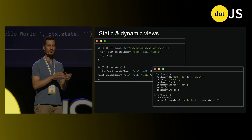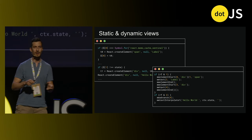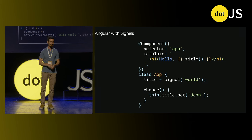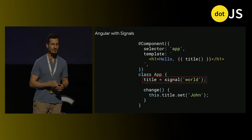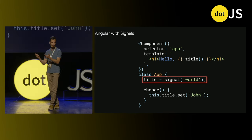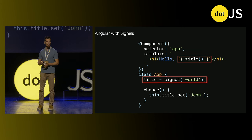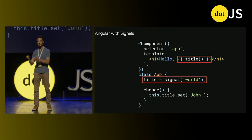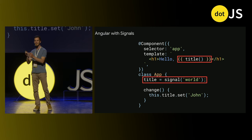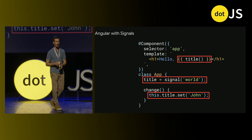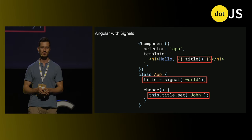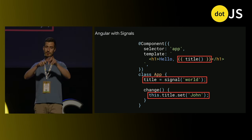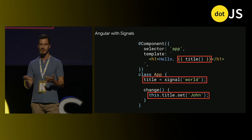Here is how Angular uses signals. We have a title property assigned to a signal with the string 'world'. When we read the value of the signal inside a template, we're letting the framework know the exact place where we need to track changes in the title property. So when we update the title property, the framework can go to that exact place in the view and update the UI instead of traversing the entire component tree.